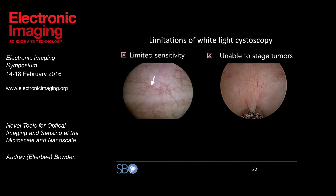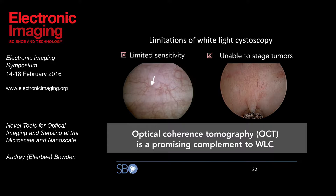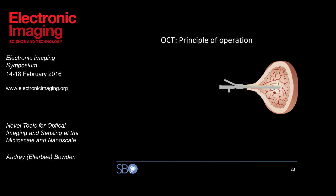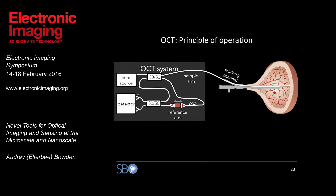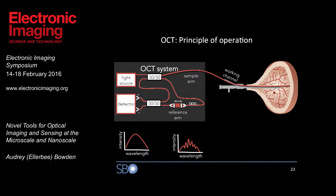OCT is a promising candidate as a complement to white-light cystoscopy, because OCT can see below the surface — which is very important in assessing not only whether a tumor is present, but also identifying its stage. The general principle of operation would be to create a probe that can be inserted into a standard cystoscope's working channel, connected to an OCT system, and then be able to look around the bladder and identify tumors even at the earliest stages. The light illuminates the system, gets sent to the sample, and we get back an interference pattern that tells us about the different layers of the bladder wall. We convert that into an A-scan and then into a cross-sectional B-scan.